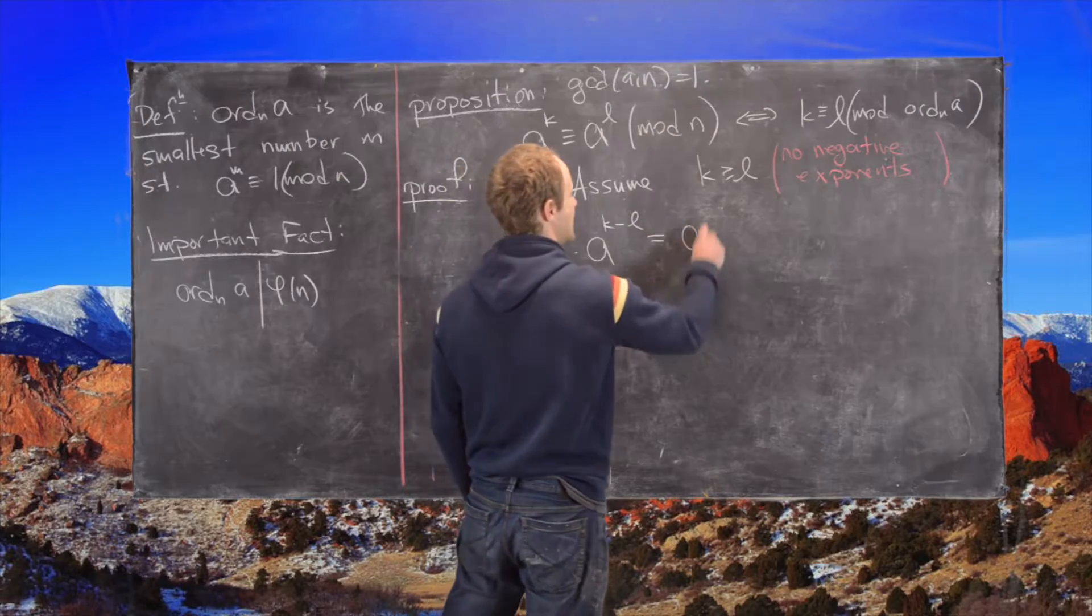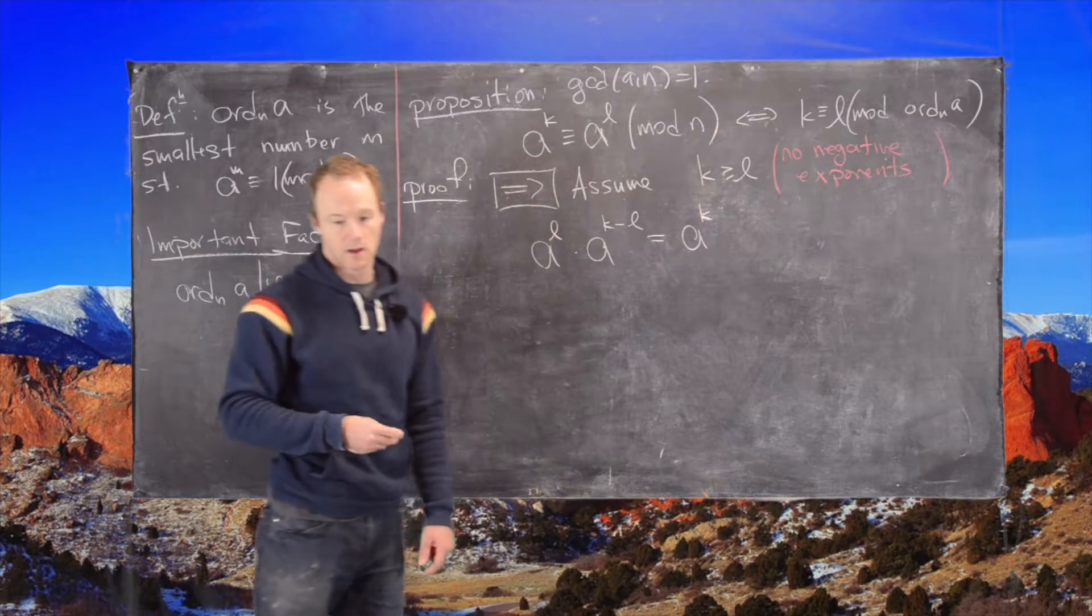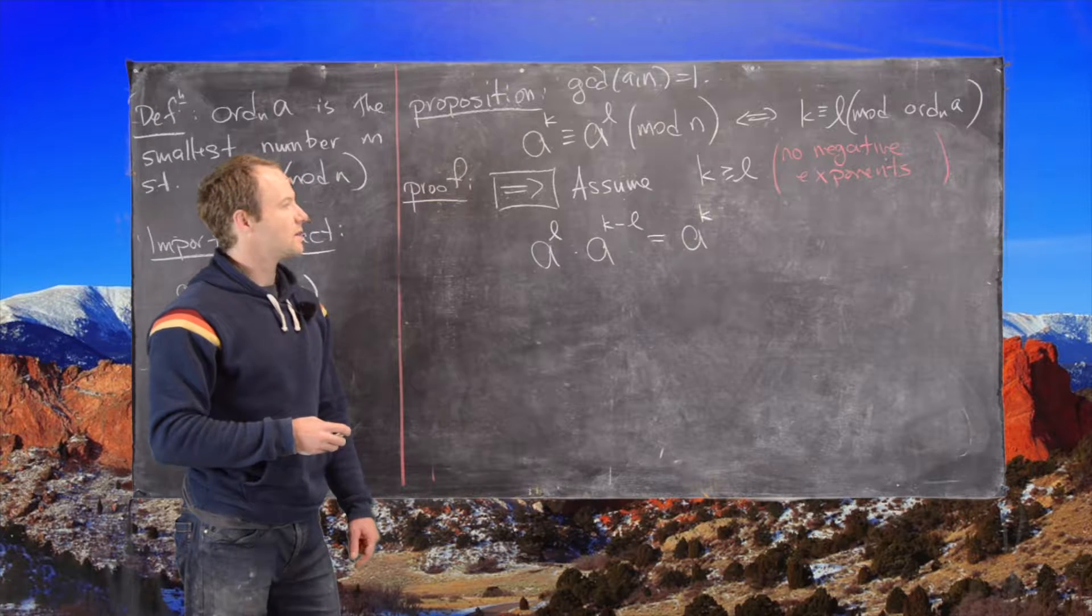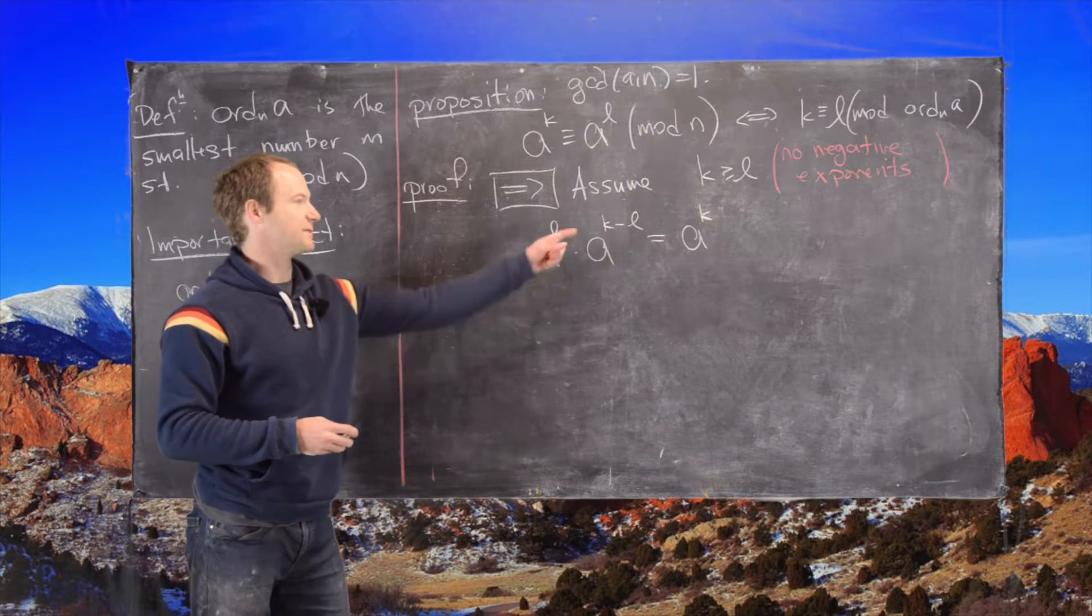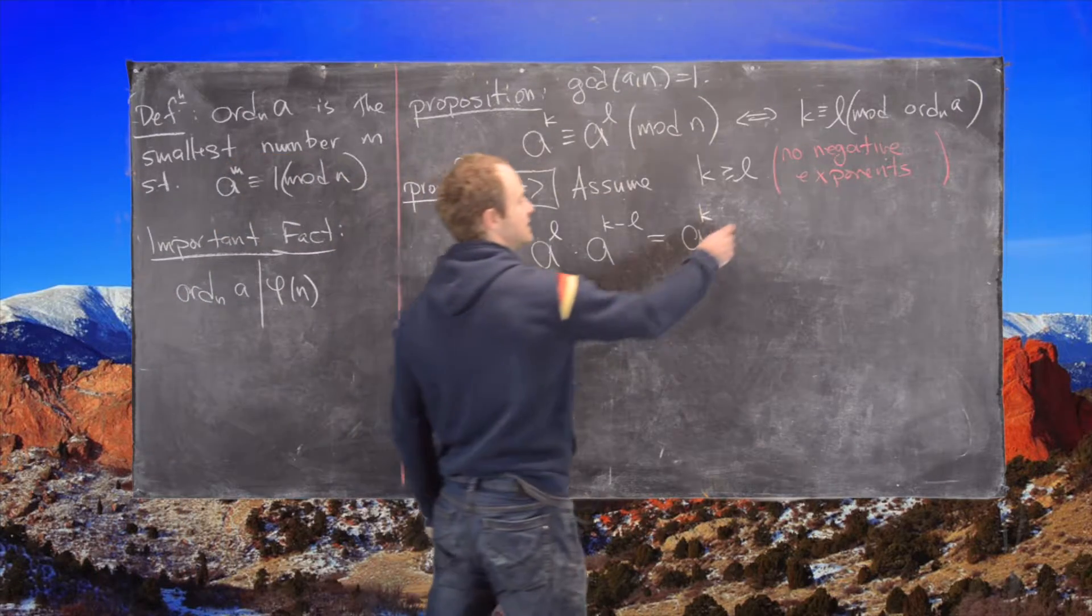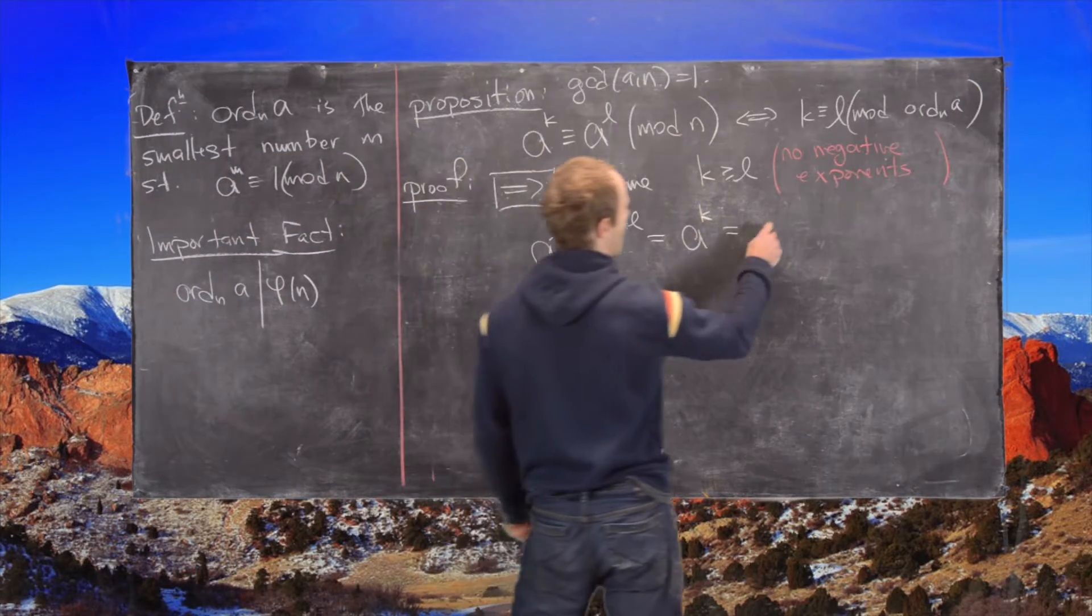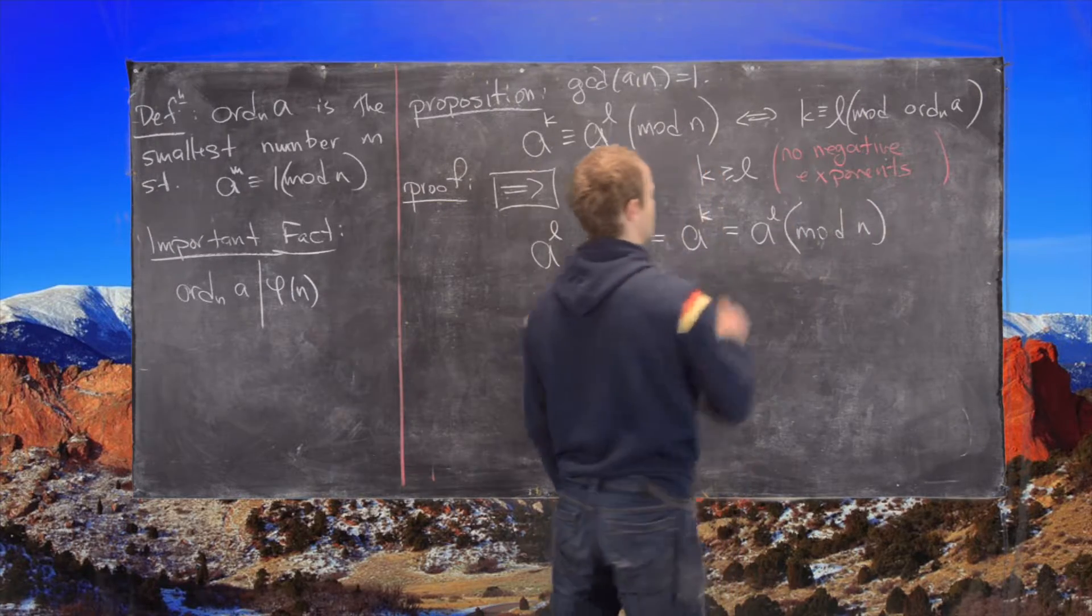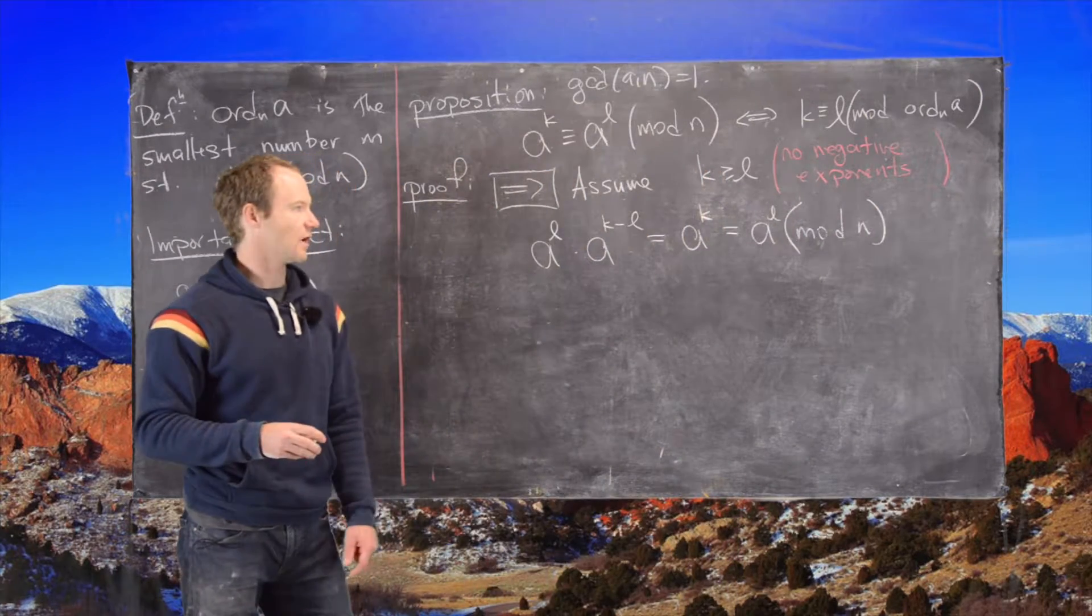So now that this is equal to a to the k by just some exponent rules, and then by assumption this is equal to a to the l modulo n. Okay, great.